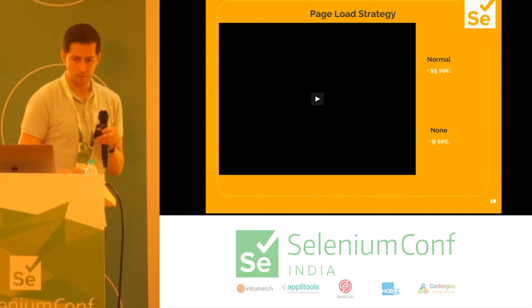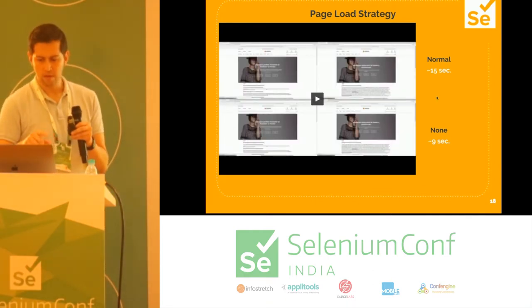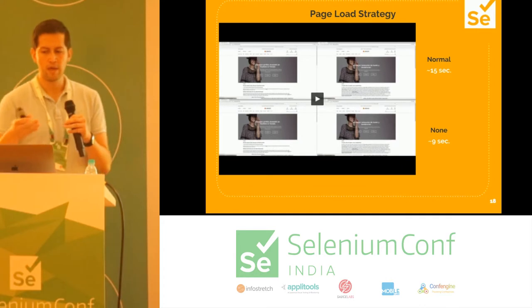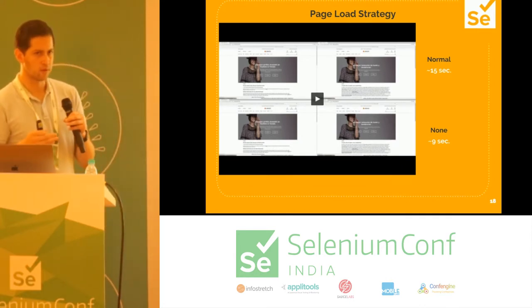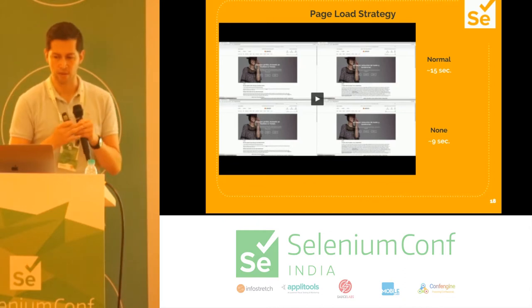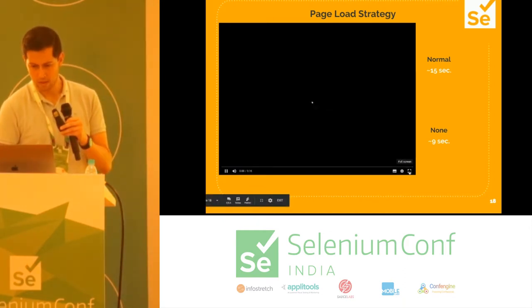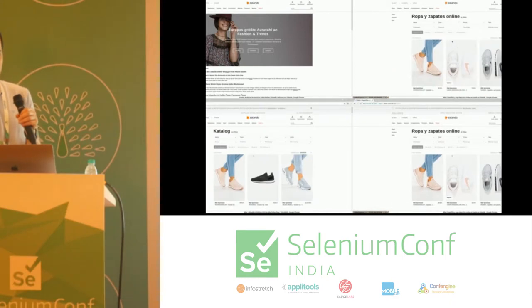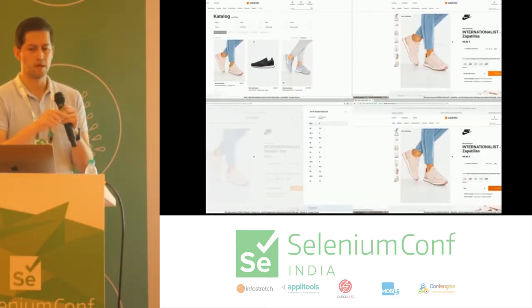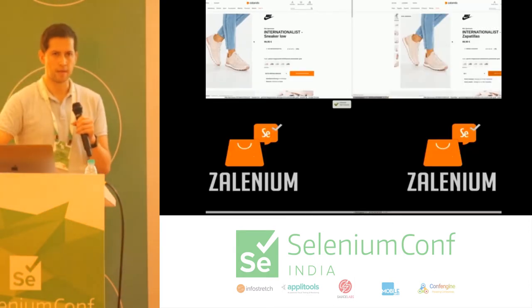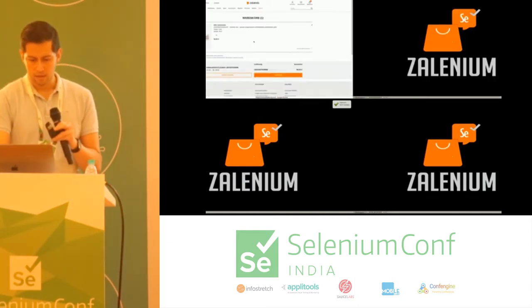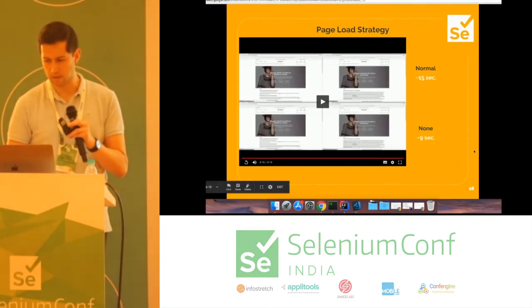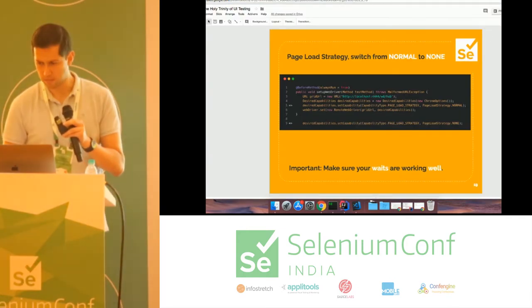What we did was to play with the page load strategy. On the upper part you can see the website — left side the German version, right side the Spanish version. The upper part uses the normal page load strategy and the bottom part uses the 'none' page load strategy. The test goes to the application, does a search, clicks on the first item, goes to the detail, selects a size, and puts it in the basket. It goes pretty fast on the bottom part because of the 'none' page load strategy.